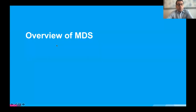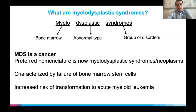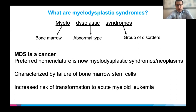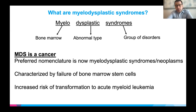Let's talk about MDS for a second. What does MDS mean? I like to break down the word: 'myelo' really means bone marrow, 'dysplastic' is abnormal differentiation or abnormal type of cells, and 'syndromes' are a group of disorders. It's very important to say that MDS is a cancer. The preferred nomenclature now is myelodysplastic syndrome slash neoplasm, really highlighting that these are malignancies.